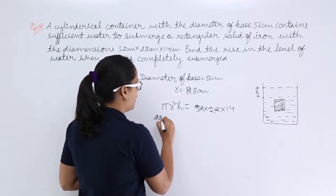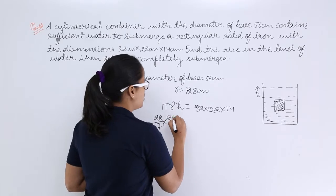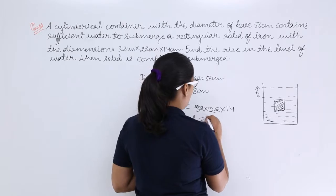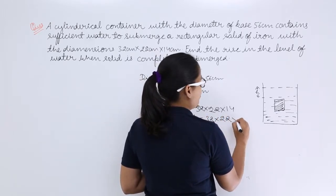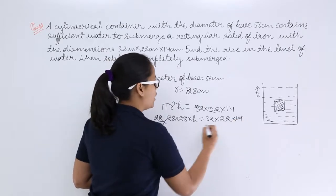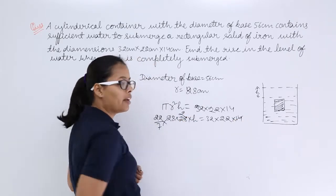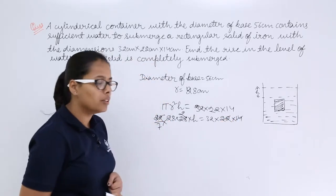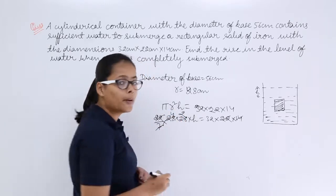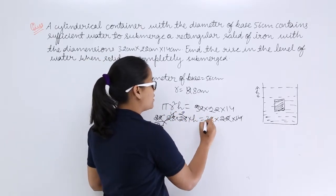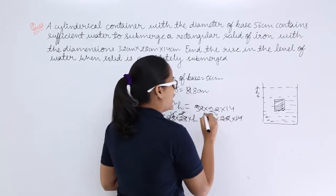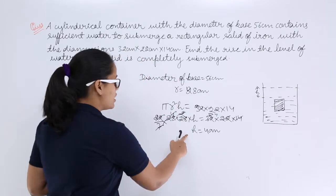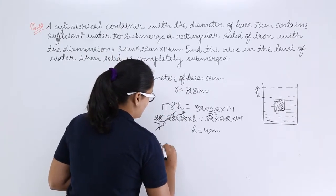We know the radius is 28 and pi is 22/7. So the equation becomes: (22/7) × 28 × 28 × h = 32 × 22 × 42. Notice that 42 divided by 7 gives 6, and two 14s make 28. The 22s cancel out on both sides. Solving for h gives us 4 centimeters — that is the rise in water level.